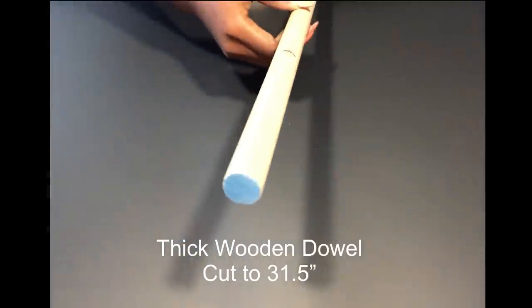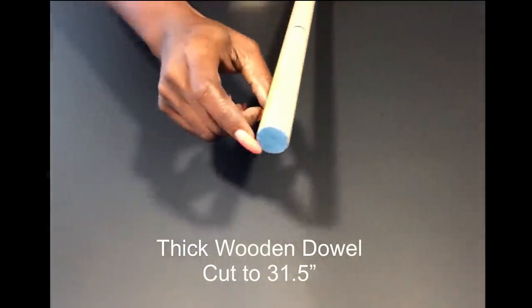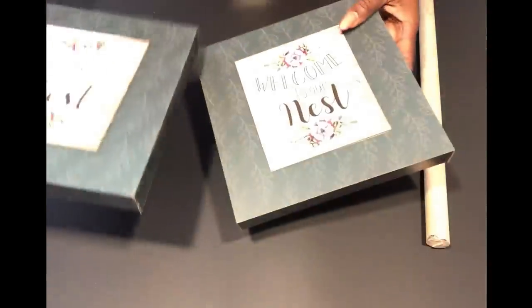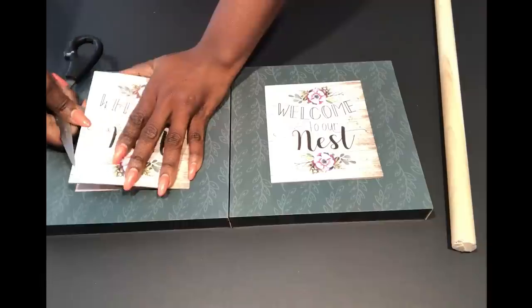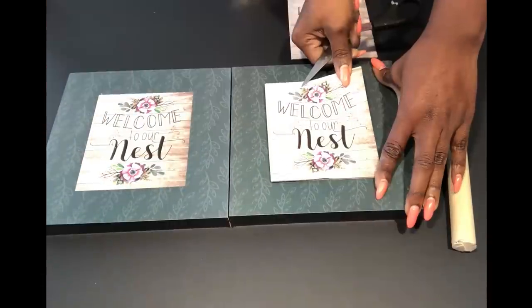Now this is the wooden dowel that I'll be using that I cut to the length that I want. And then I also picked up plaques from the Dollar Tree and I'll be attaching two plaques together and then attaching the dowel to the plaques.